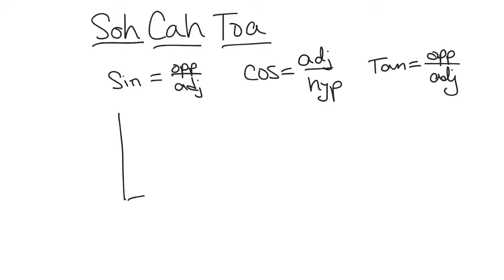SOH CAH TOA, or SOHCAHTOA for some of you. What does this mean? Well, SOH - the sine of the angle equals opposite over hypotenuse. CAH - the cosine of the angle equals adjacent over hypotenuse. And lastly, TOA - the tangent equals opposite over adjacent.